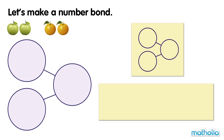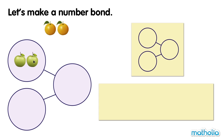How many fruits are there all together? Let's make a number bond. In one part, there are two apples. Two.